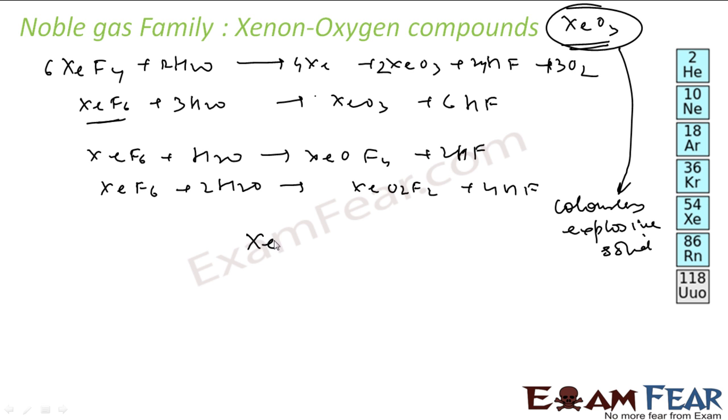Talk about the structure of this XeO3. This is xenon: 1, 2, 3, 4, 5, 6, 7, 8 electrons. Oxygen, 2 bonds, 2 oxygens, and again oxygen. So I have 3 bonds and 1 lone pair. That is 1 lone pair plus 3 bond pairs. So this shape will be pyramidal.